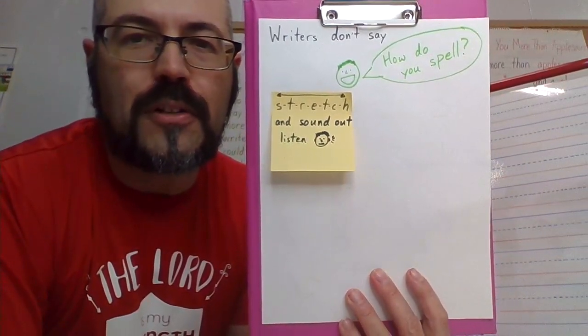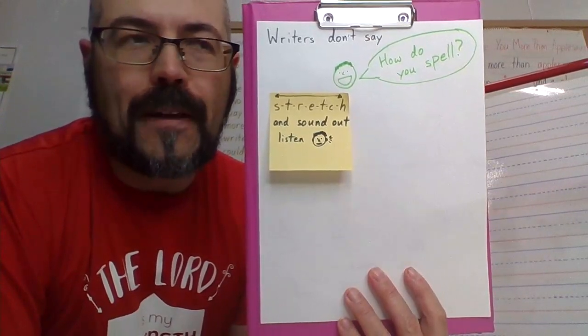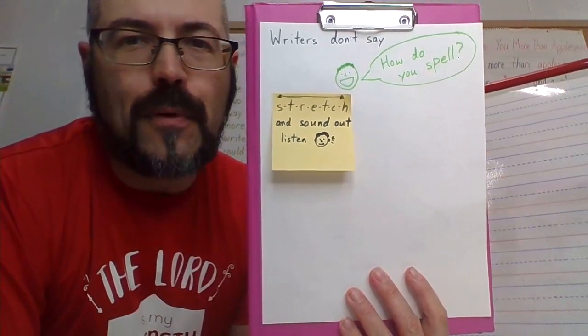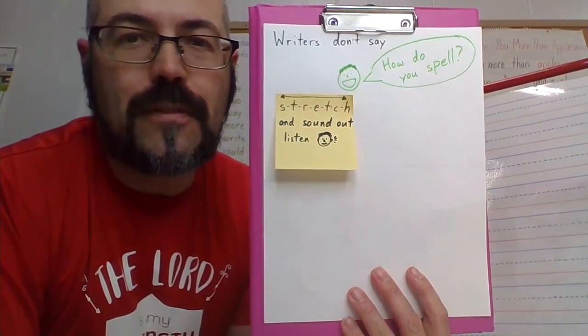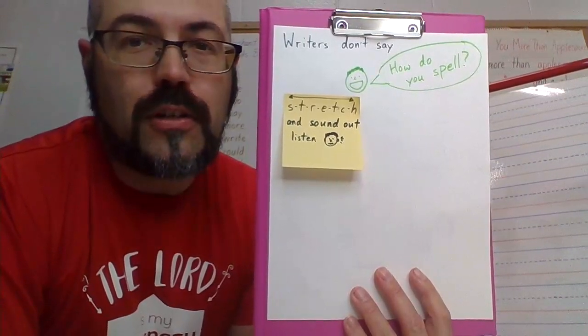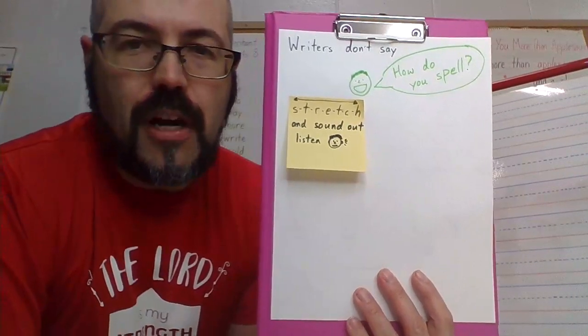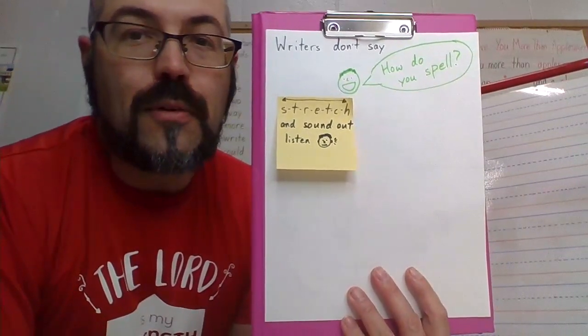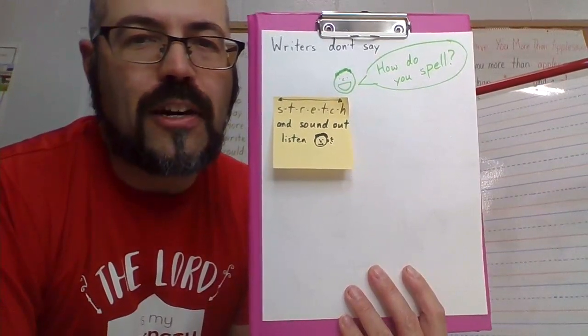For example, if you want to spell the word, let's pick an easy one, dog. If I wanted to write dog and I don't know, I would check my sounds. D, d, d, that's a D. Ah, ah, ah, that's an O. G, g, g, that's a G. Put them together. D, ah, g, dog. You can do that with any word. When it gets longer, it can be hard, but you can try your best.